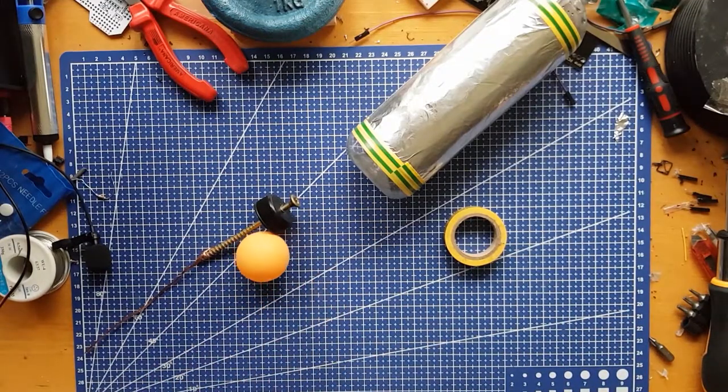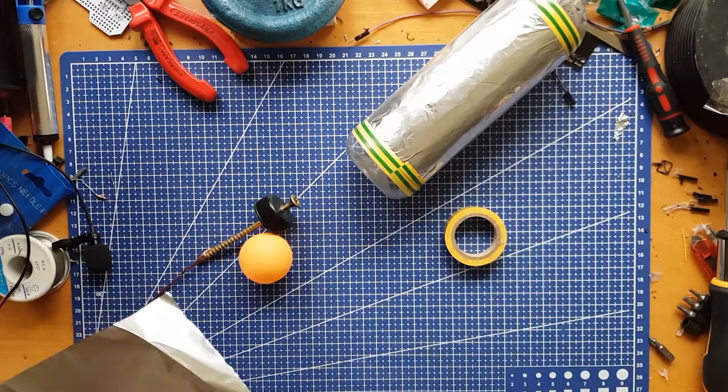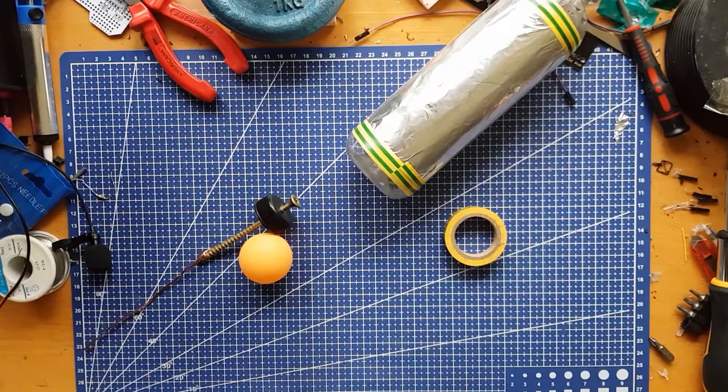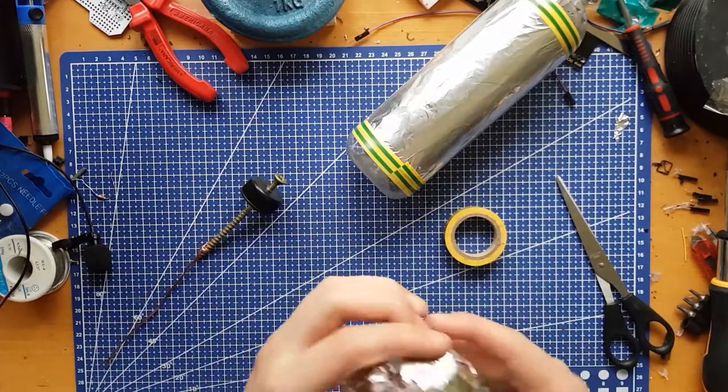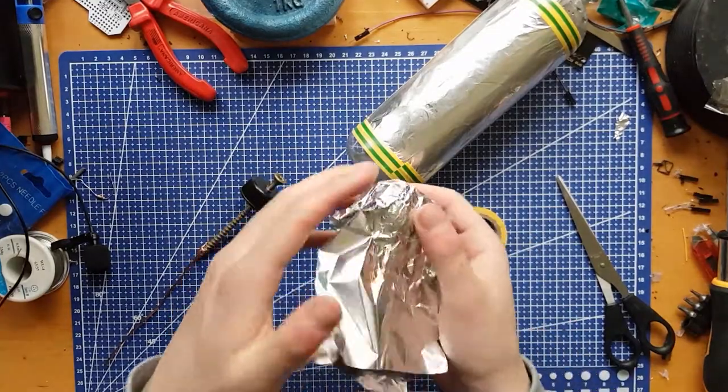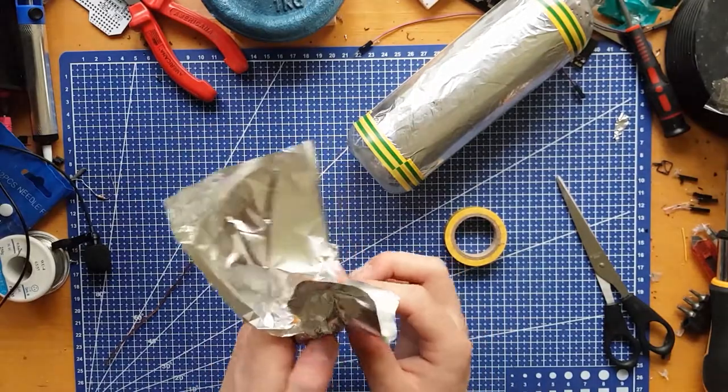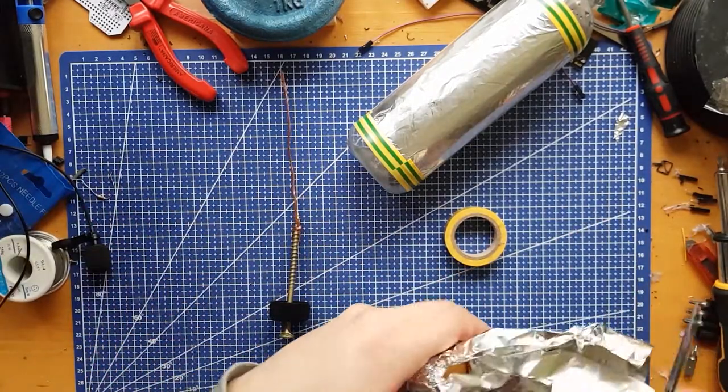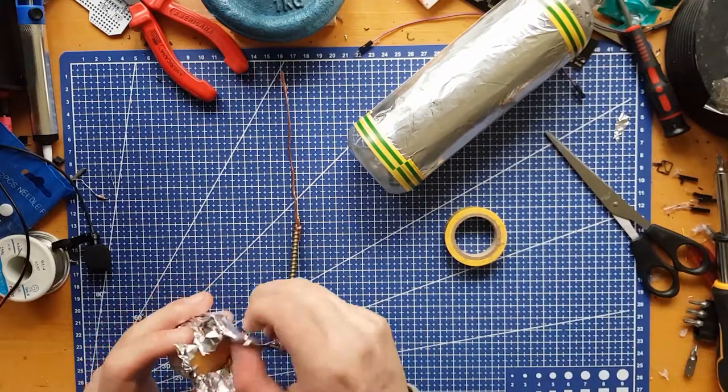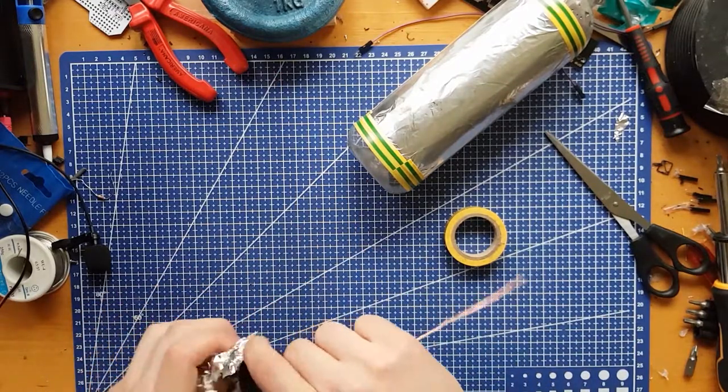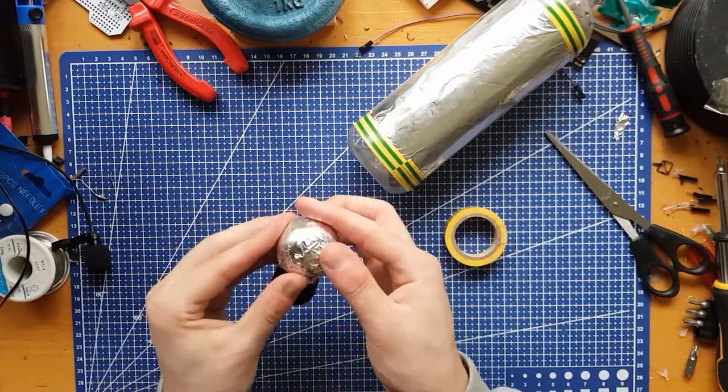On top of this screw I will put a ping pong ball which I will wrap in aluminum foil and I will try to make it as smooth as possible. Because the less spiky it is, the less charges will run away. The important part here is that the foil has to make contact with the screw or nail, because otherwise it will be isolated and will not transmit charges.